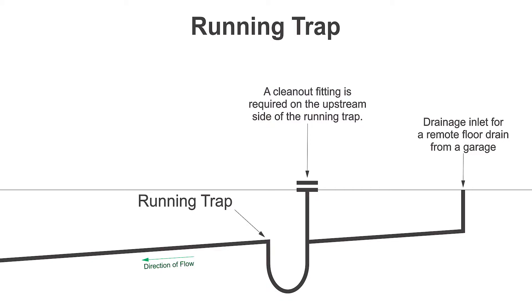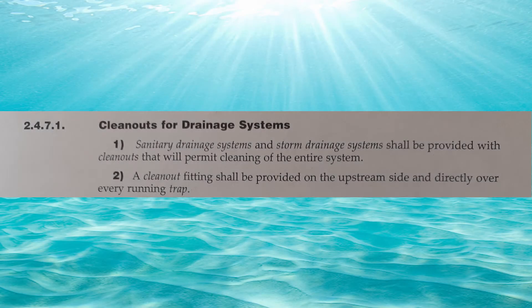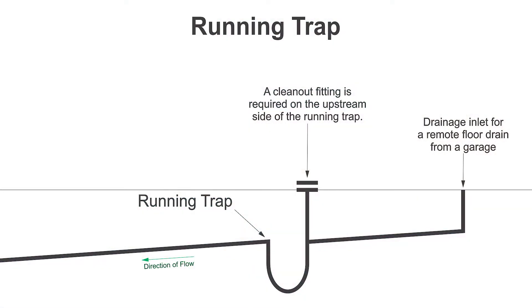There are very few regulations around the running trap, but we do have one in clause 2471 part 2. A clean out fitting shall be provided on the upstream side and directly over every running trap. We can see that clean out fitting right in this picture here, on the upstream side of the running trap. The reason why it's there: if anything comes down that floor drain from the garage in this particular picture, it'll get built up in the P-trap and we have a means to clean it out.